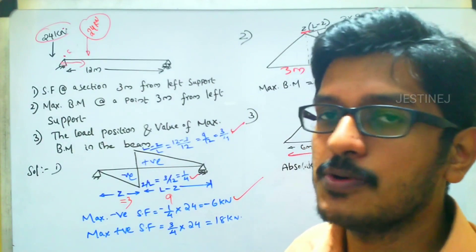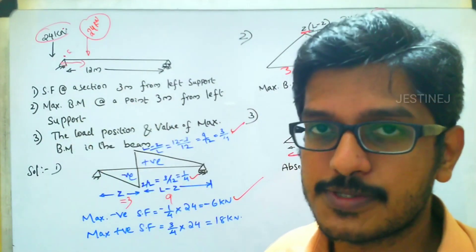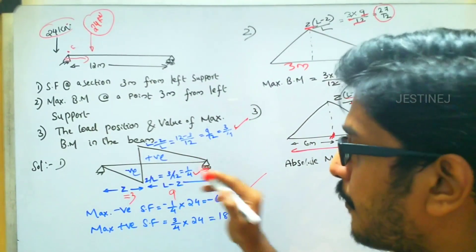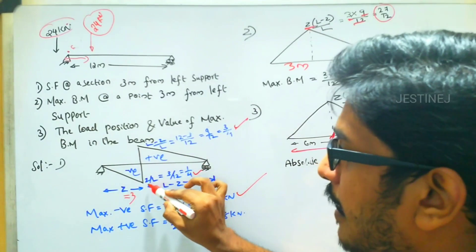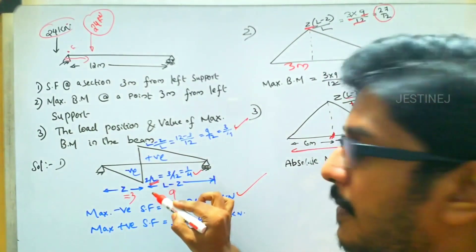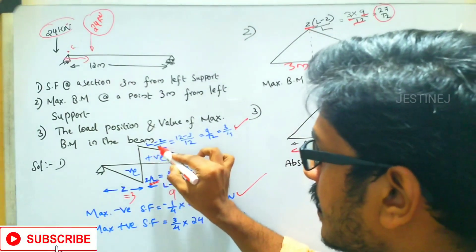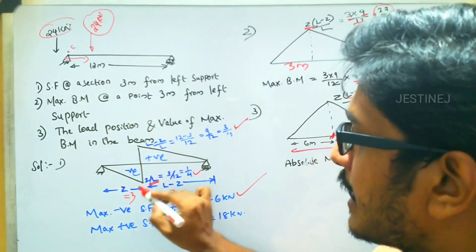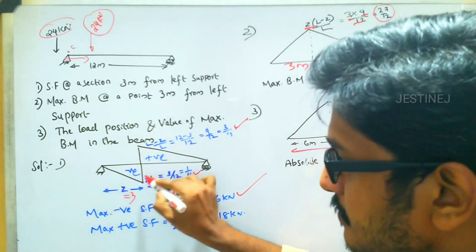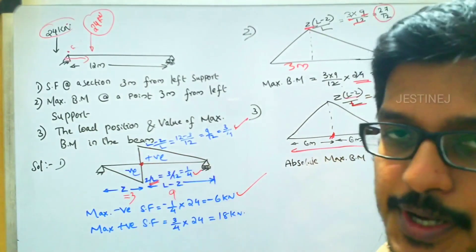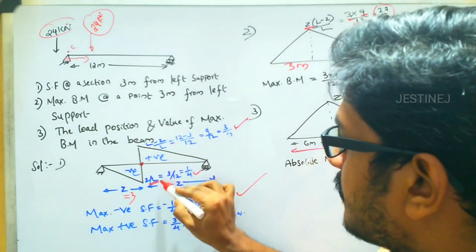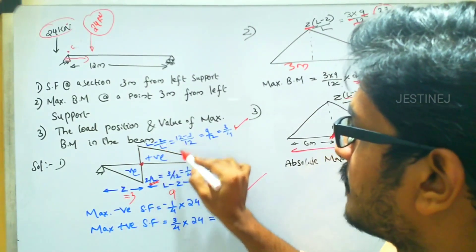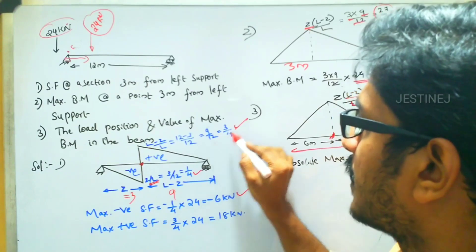With the help of the influence line diagram, we will calculate the shear force. We already derived these equations and formulas. The maximum negative shear force value is minus Z by L, and the maximum positive shear force value is L minus Z by L, where Z is the distance of the shear force point. So Z by L equals 3 by 12, which is 1 by 4, and L minus Z by L equals 9 by 12.